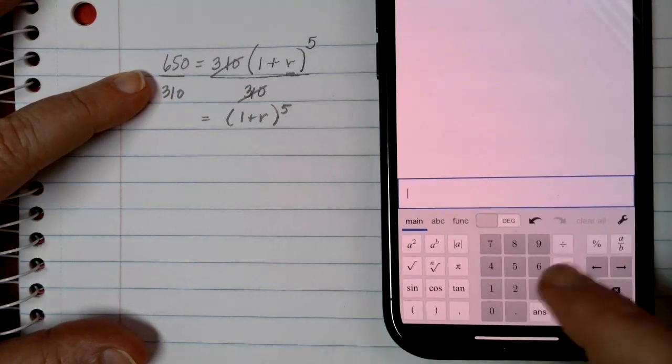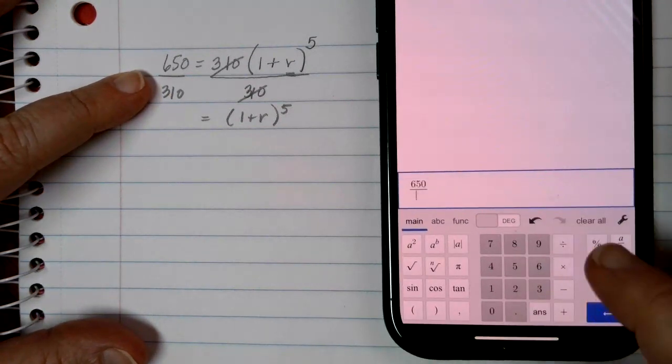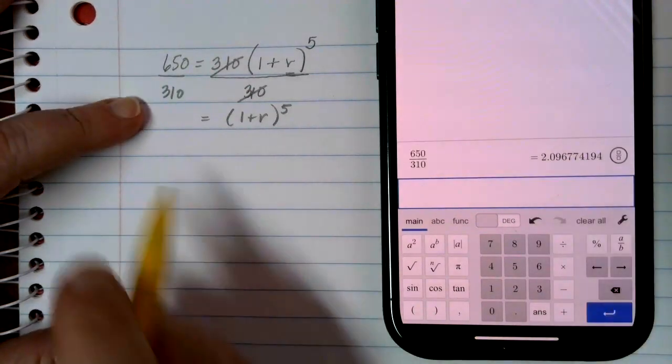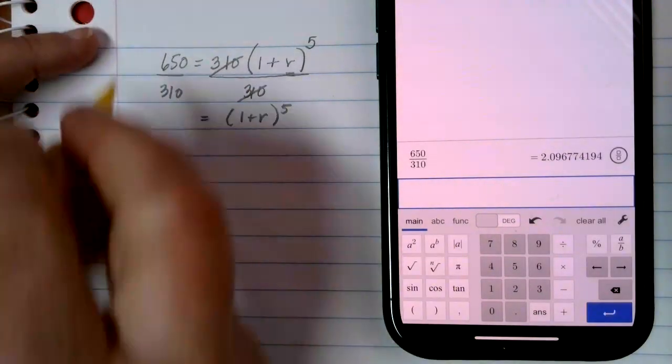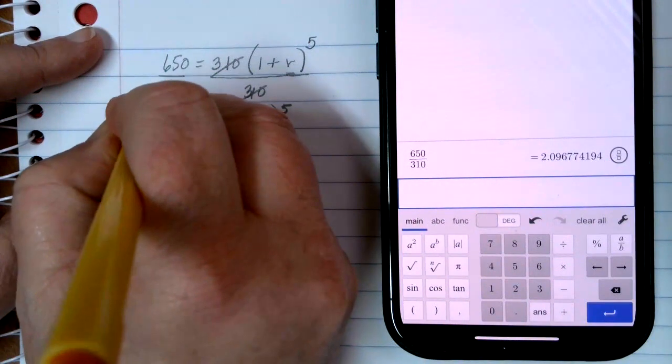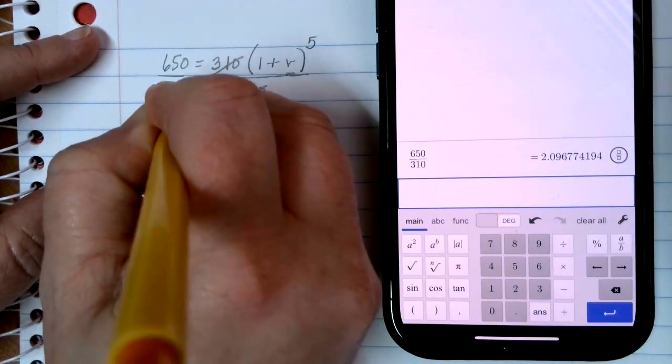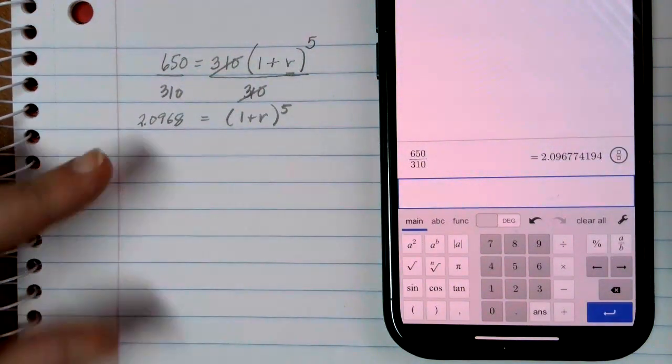So I'll pull my calculator out here. I've got 650 divided by 310. And in this case, I get this 2.09677 number. Round that a little bit.